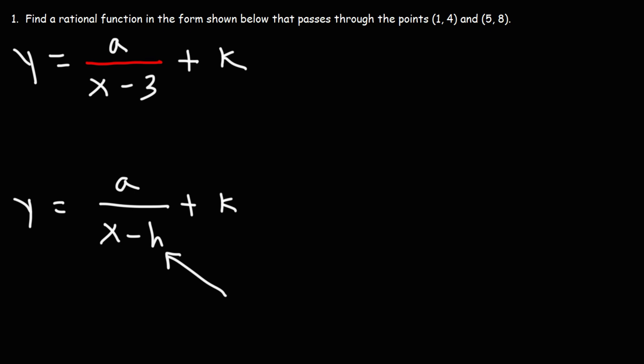h gives you the vertical asymptote. The vertical asymptote is x equals h. k gives you the horizontal asymptote which is y equals k. a tells you if the graph is going to stretch or shrink or if it's going to reflect over the x-axis.